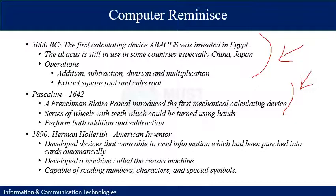In the 1890s, the American inventor Hermann Hollerith developed devices able to read information which had been punched into cards automatically. He developed a machine called the Census machine, capable of reading numbers, characters and special symbols. Remember this was only about 130 years ago. Still, these machines were not digital — they were analog, and information was fed using hard-coded mediums.